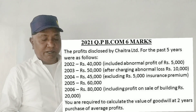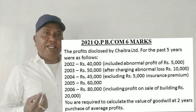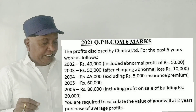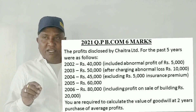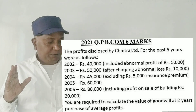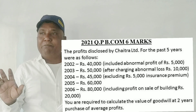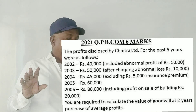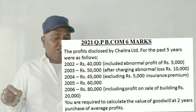The profits disclosed by Chaitra Limited for the past five years were as follows: 2002 — 40,000, included abnormal profit of 5,000. 2003 — 50,000 profit, after charging abnormal loss of 10,000. 2004 — 45,000 profit, excluding 5,000 insurance premium. 2005 — 60,000, no adjustment. 2006 — 80,000 rupees, including a profit on sale of building of 20,000.